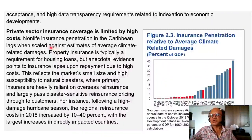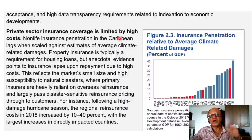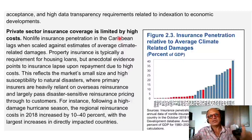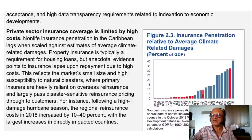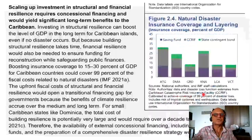Private sector insurance coverage is limited by high costs. Insurers will begin to back off if high-frequency low-intensity events become too frequent — even though intensity may be low, the damages they pay out begin to add up, and insurance coverage becomes too costly or is not offered at all, so premiums go up. Insurance penetration relative to average climate-related damages as a share of GDP is low in many regions — in some places literally zero or less than 10%.